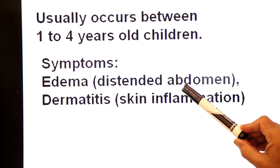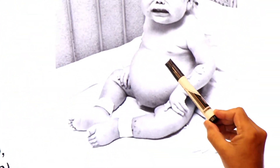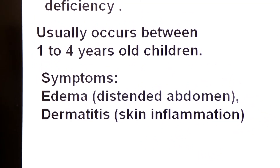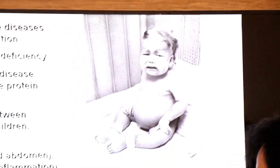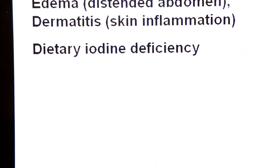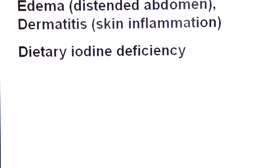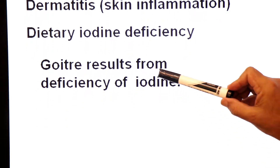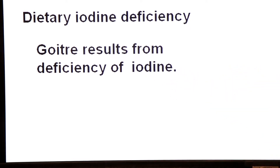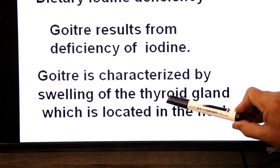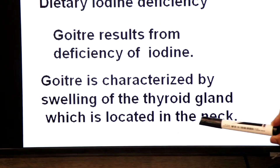So the symptoms of Kwashiorkor disease are: first, edema — distended abdomen; second, dermatitis — skin inflammation. Now our second example is dietary iodine deficiency. If there is a deficiency of iodine in the diet, a disease called goiter is produced. Goiter results from deficiency of iodine. This condition is called goiter — enlargement of the thyroid gland due to deficiency of iodine. Goiter is characterized by swelling of the thyroid gland, which is located in the neck region.